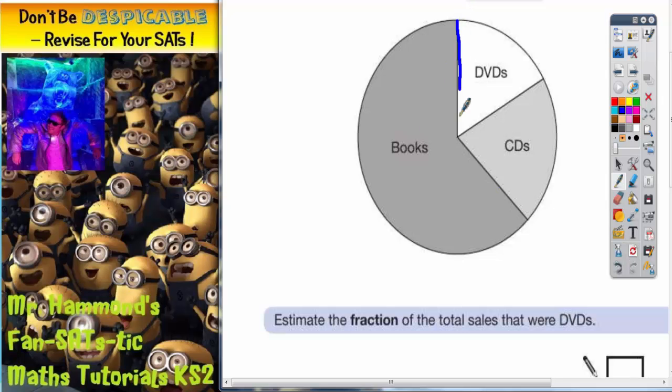It goes without saying that halves isn't going to work either because it's a lot less than a half. So we've tried quarters, we've tried halves. What about thirds? We split the whole pie chart into roughly three sections. Again, DVDs is too small to be a third.